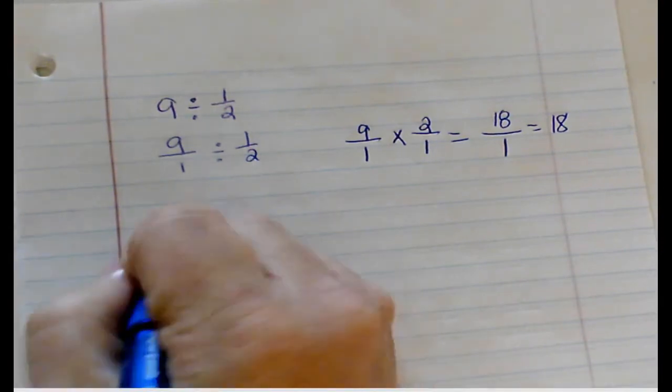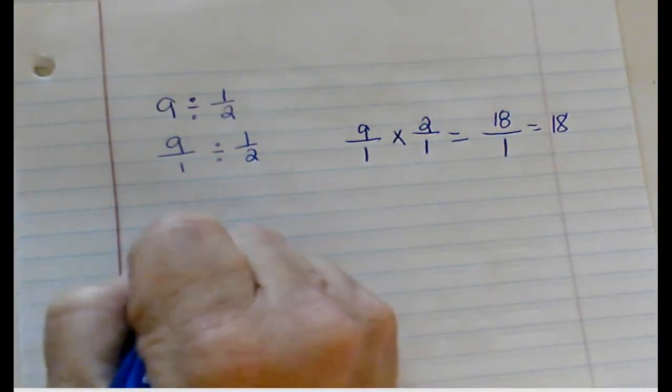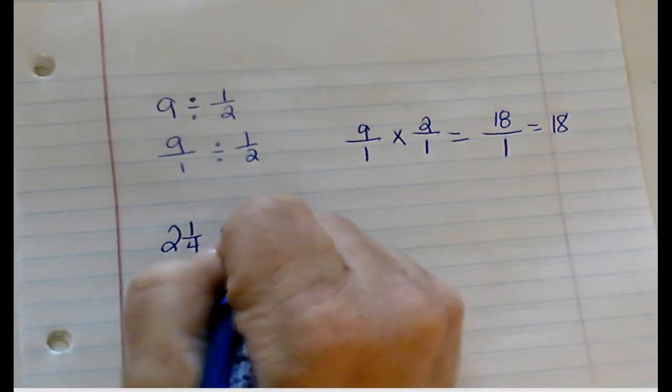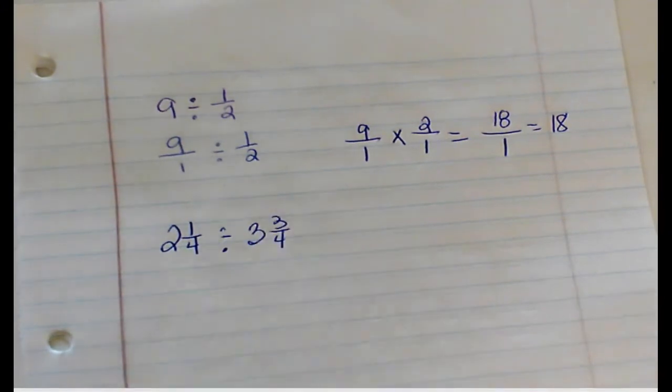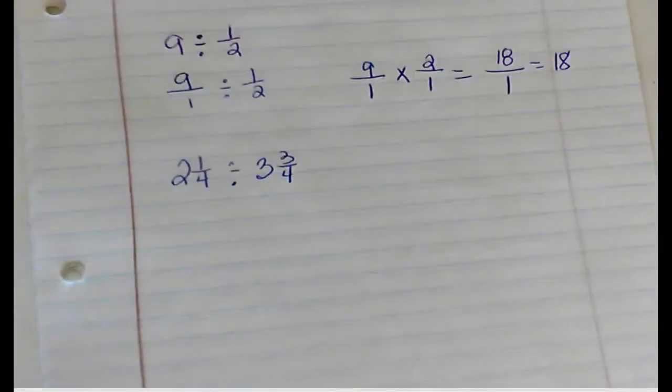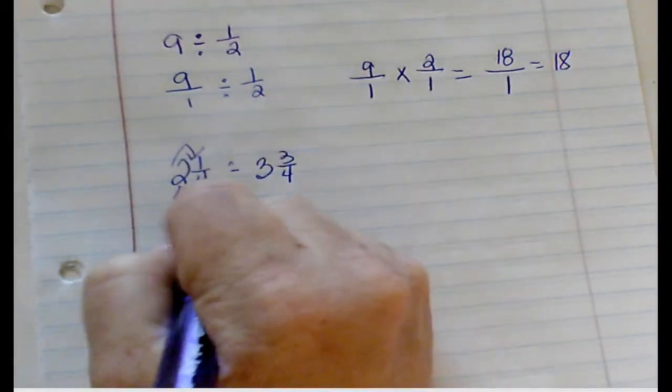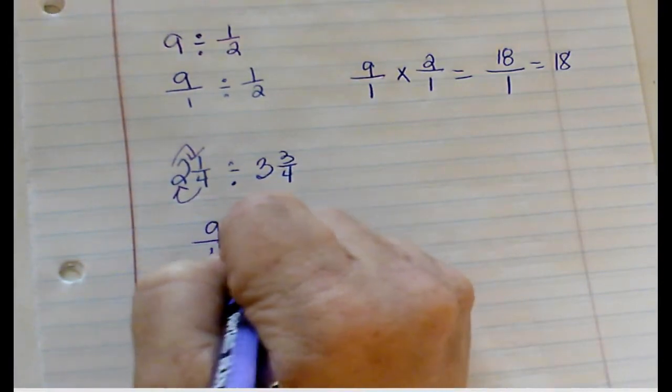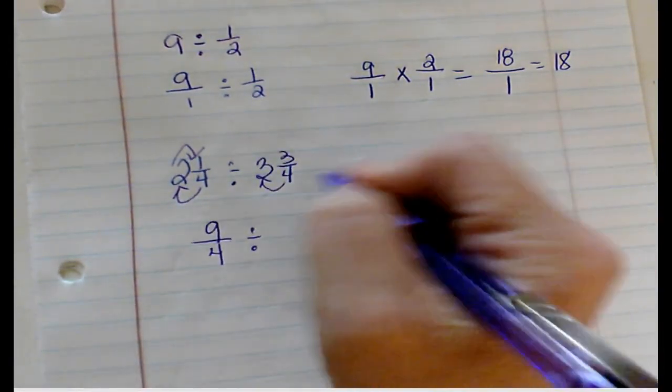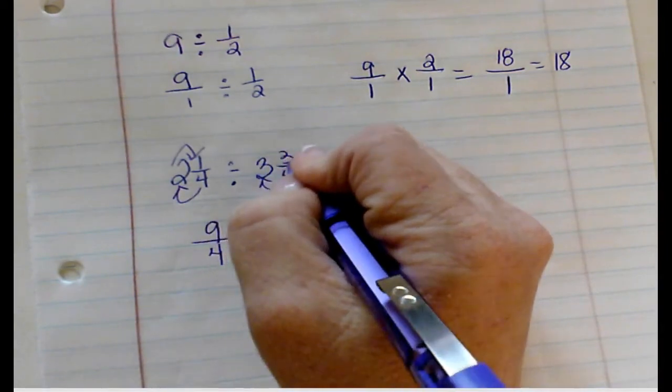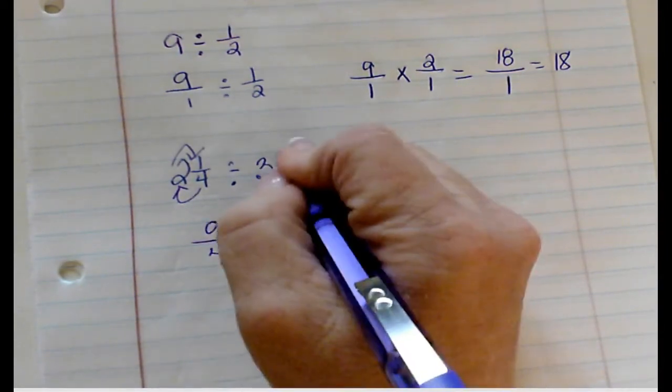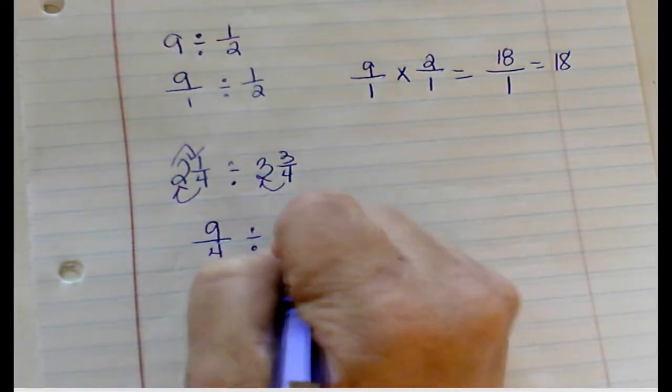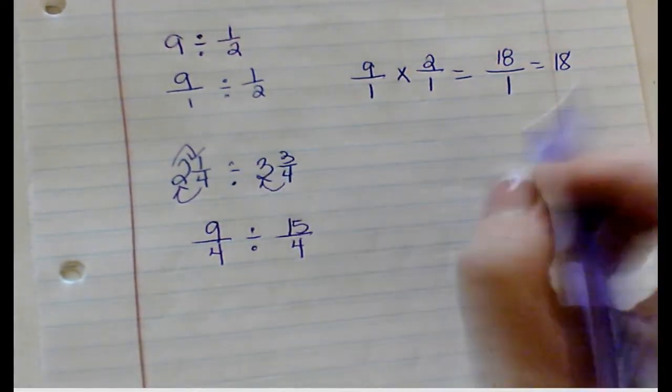If you had 2 and 1/4 divided by 3 and 3/4, you will have to put these into an improper fraction. 4 times 2 is 8, plus the 1 is 9, so 9 over 4. Divided by 4 times 3 is 12, plus the 3 is 15, so 15 over 4.